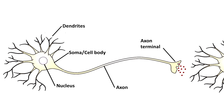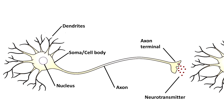This is the axon terminal. When any neuron receives a signal through the dendrites, it will generate an action potential within itself. This action potential is nothing but an electrical signal. This electrical signal is passed through the axon and reaches up to the terminal part — the axon terminal — and finally releases certain chemicals called neurotransmitters. In today's lecture we will learn about the different types of neurotransmitters.